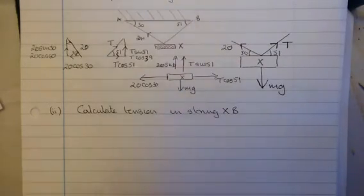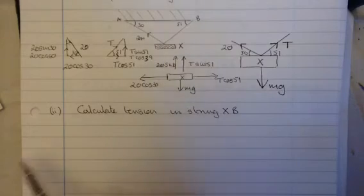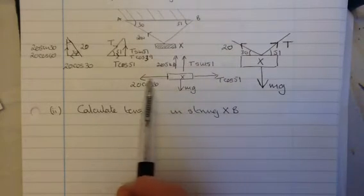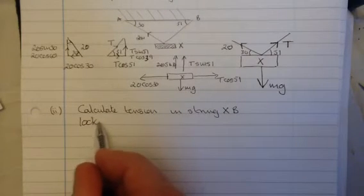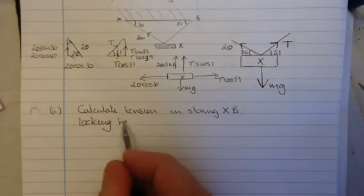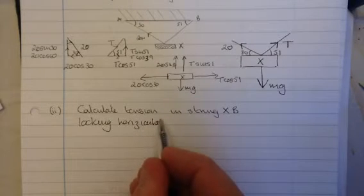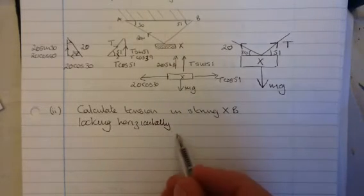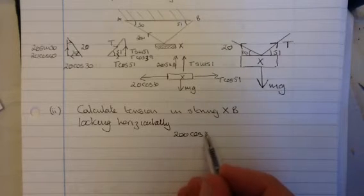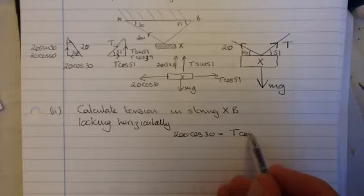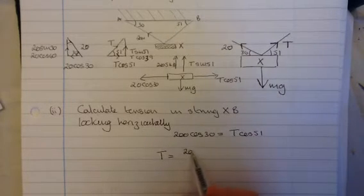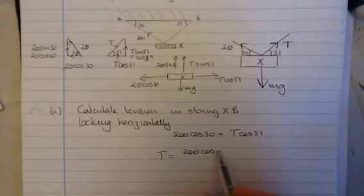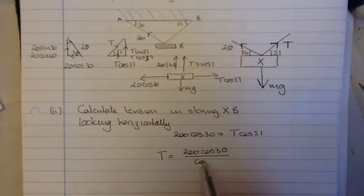Okay, now the way we're going to do that is we're going to look horizontally. Because it's in equilibrium, all the forces must give a result of zero. In other words, the forces to the left have to equal forces to the right. So, looking horizontally, we have 20 cos 30 is equal to T cos 51.